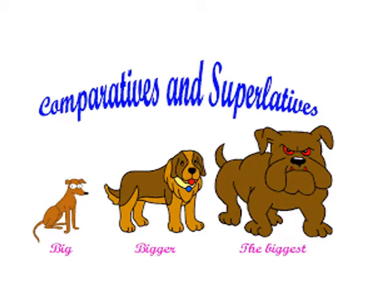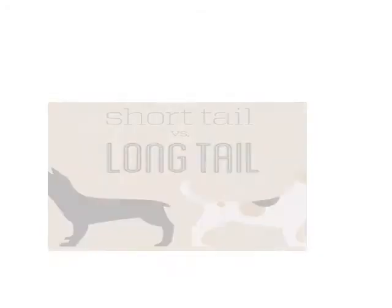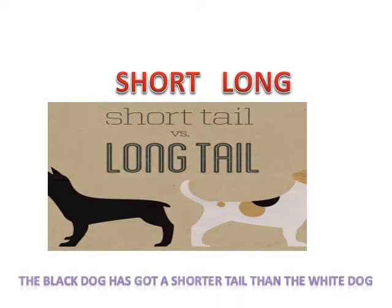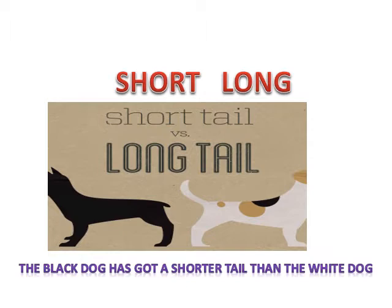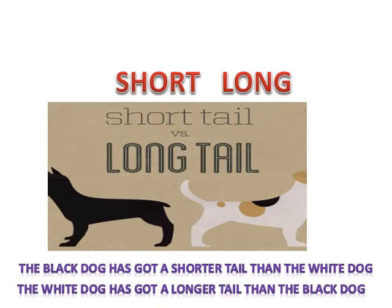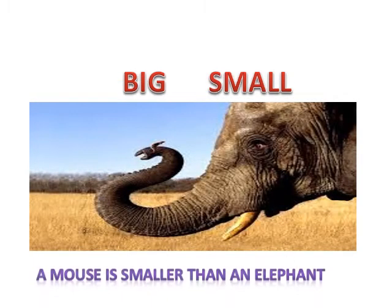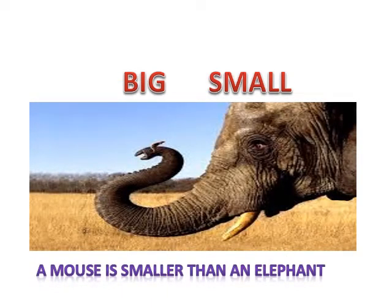Here we have short and long adjectives. If we are comparing between the black and the white dog, the black dog has got a shorter tail than the white dog. And the white dog has a longer tail than the black dog.